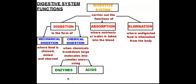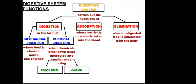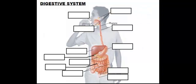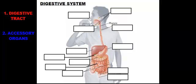Those are our three functions of the digestive system. Now let's look at the parts. Our digestive system is broken up into two main parts: the digestive tract and the accessory organs. The digestive tract contains the organs that food directly passes through — they break down and digest the food. The accessory organs help digestion by making chemicals, but food does not pass through them.